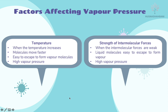Factors affecting vapor pressure: temperature and strength of intermolecular forces. When temperature increases, molecules move faster, making it easier to escape and form vapor — resulting in high vapor pressure. When intermolecular forces are weak, liquid molecules can more easily escape to form vapor, also resulting in high vapor pressure.